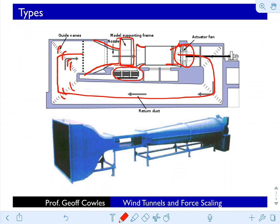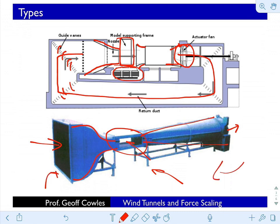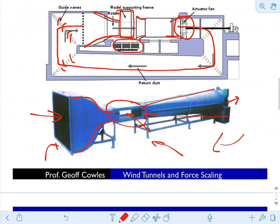A second example here is an open return wind tunnel. We have our plenum, pulling in from the room into this section. You accelerate into the test section where there's a window through which you could put instruments. If you're visualizing using PIV or smoke, you can look at the flow field. Then out through a diffuser, back to room pressure, and it forces a room flow. So open and closed return wind tunnels.